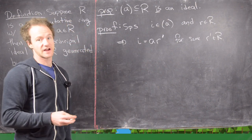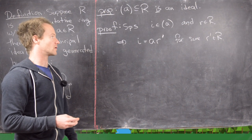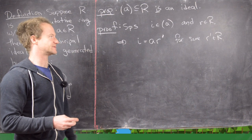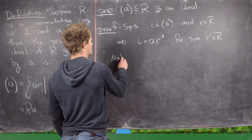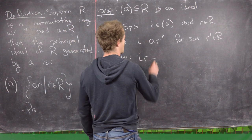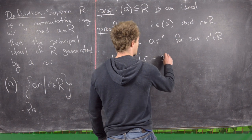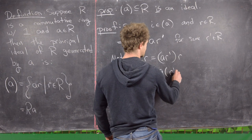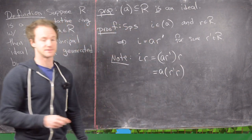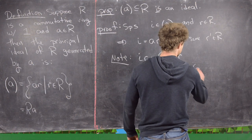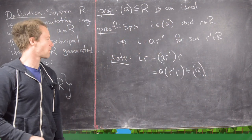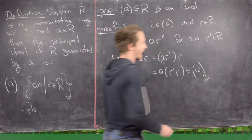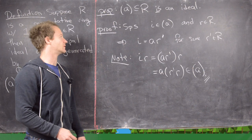We only have to check that it's a left ideal or a right ideal — let's check that it's a right ideal. Notice that I times R is the same thing as A times R' times R, which is very obviously in the ideal generated by A. That's all it takes to show that this is actually an ideal.